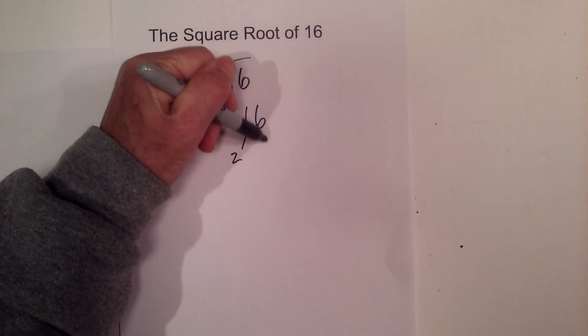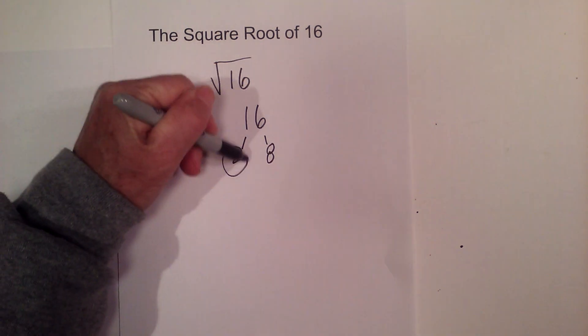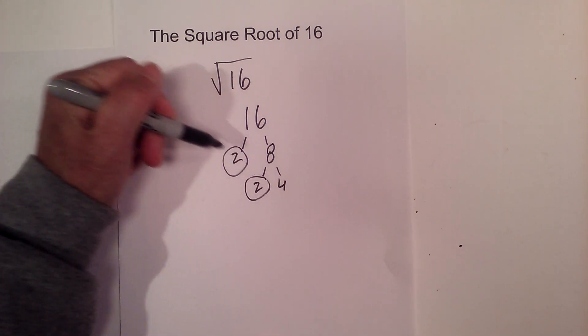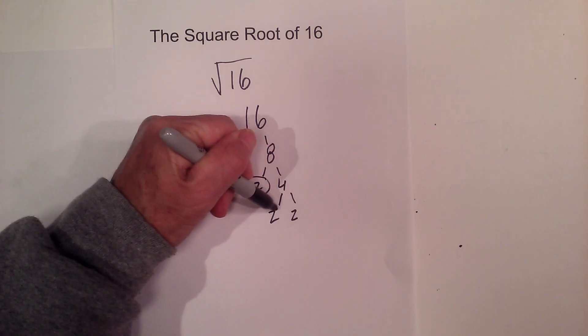And that is 2 times 8 is 16. Circle the 2 because that is prime. And then 2 times 4 is 8. Circle the 2 because that is prime. And then 2 times 2.